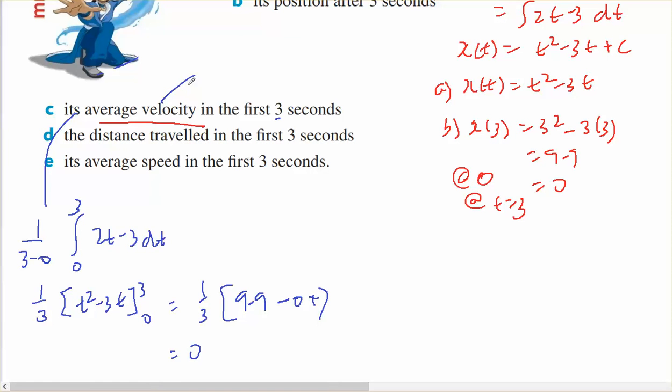So its displacement is 0. For the distance traveled in the first 3 seconds, this looks like this: it's at 0 at the start and after 3 seconds it's back where it started. Therefore, at 3 over 2 it's going to be at 3 over 2 squared minus 3 times 3 over 2, which is 9 over 4 minus 9 over 2, that's negative 9 over 4.